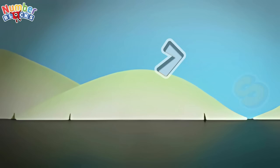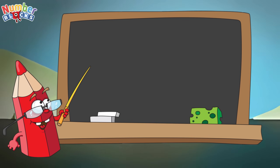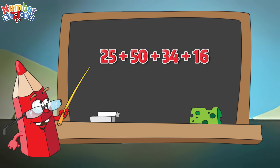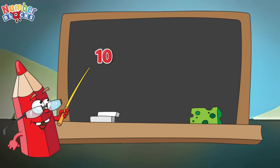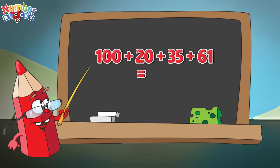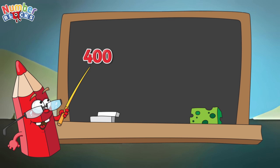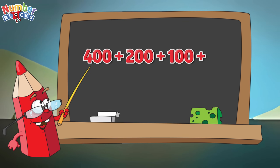Let's summarize! 25 plus 50 plus 34 plus 16 is equals to 125! 100 plus 20 plus 35 plus 61 is equals to 216! 400 plus 200 plus 100 plus 29 is equals to 729!